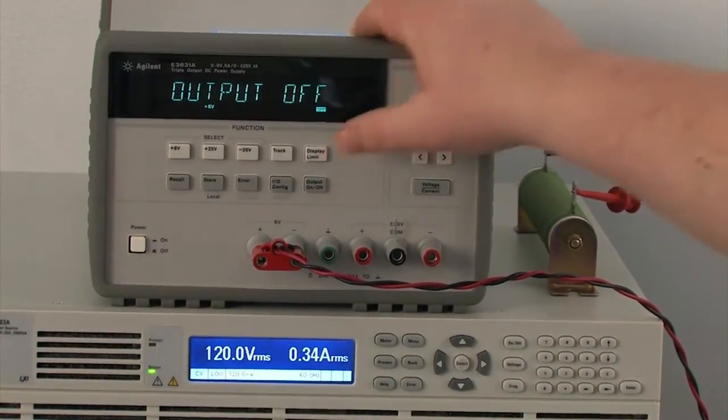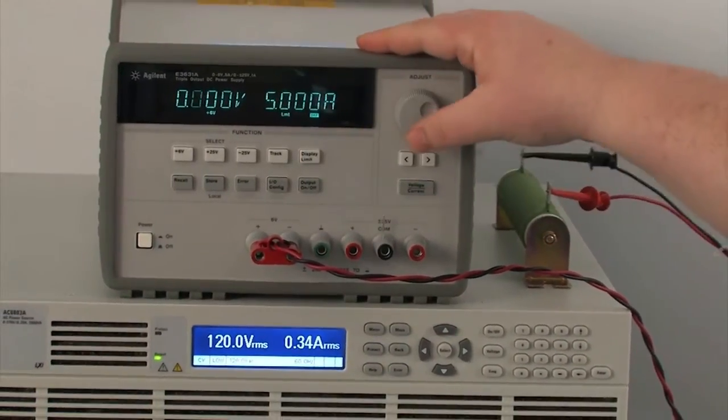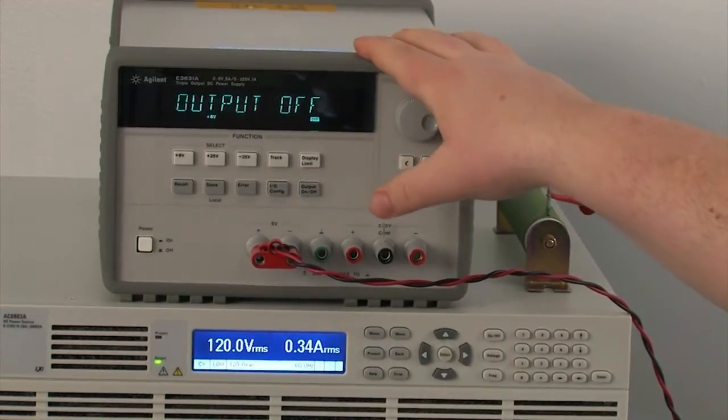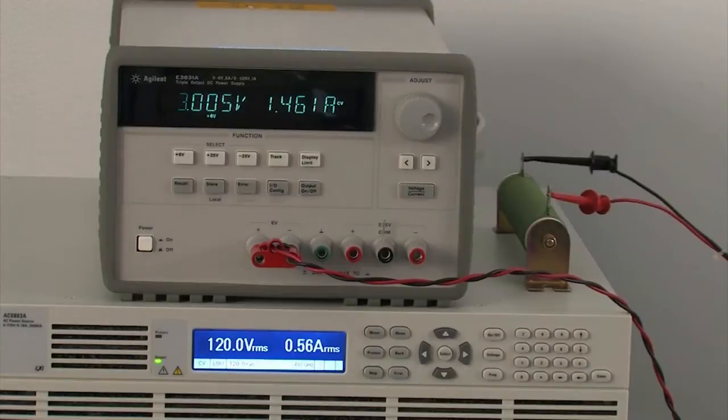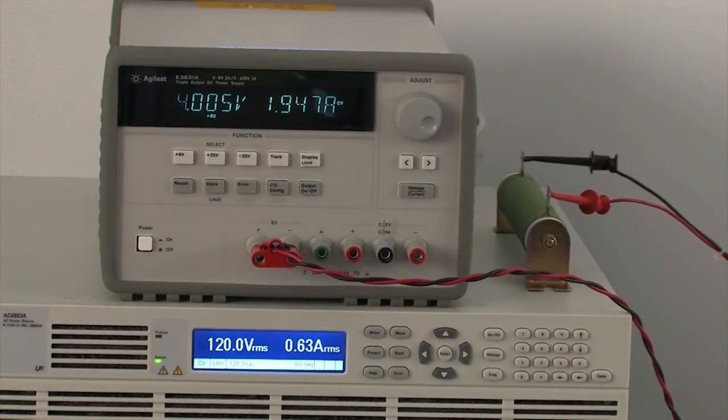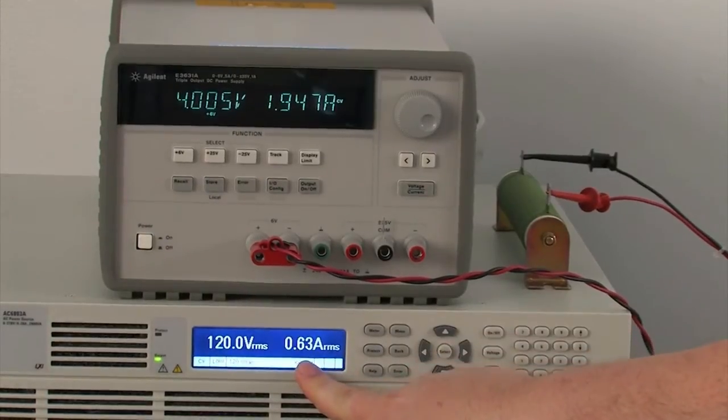So what we're going to do here first is to show you that this is really working. We're going to just set this to 4 volts and I have a 2 ohm load on there. So when I turn it on, it's going to draw around 2 amps. You can see that the current draw went up to 0.63 amps RMS.